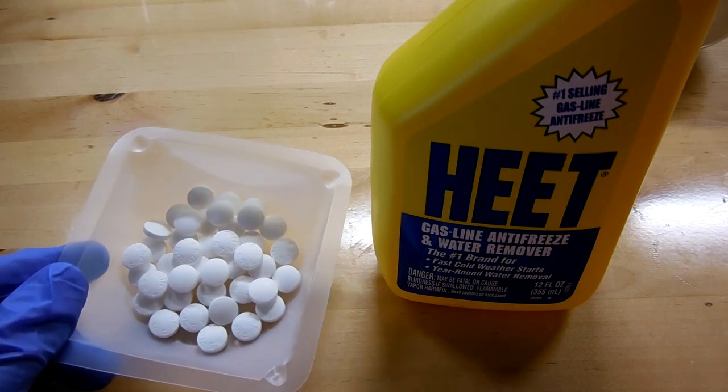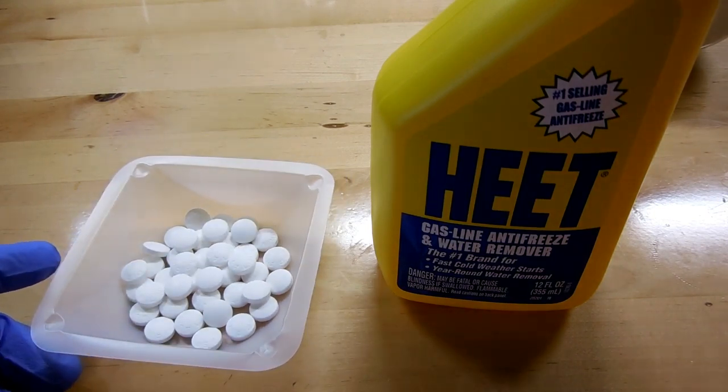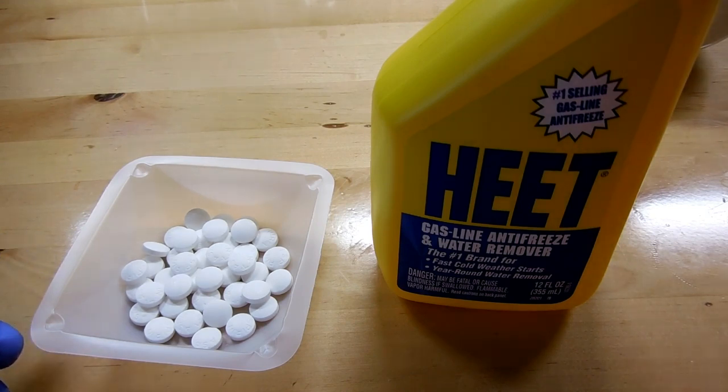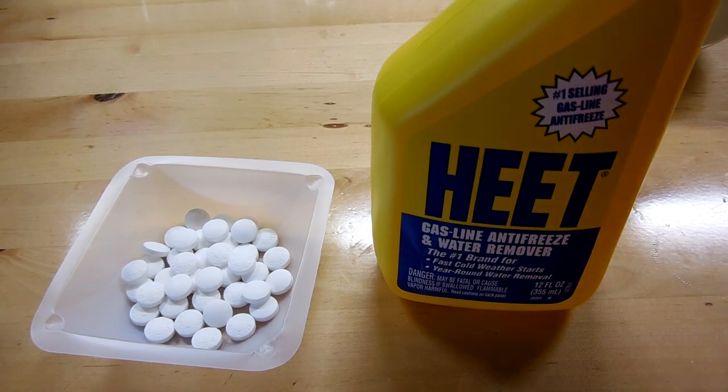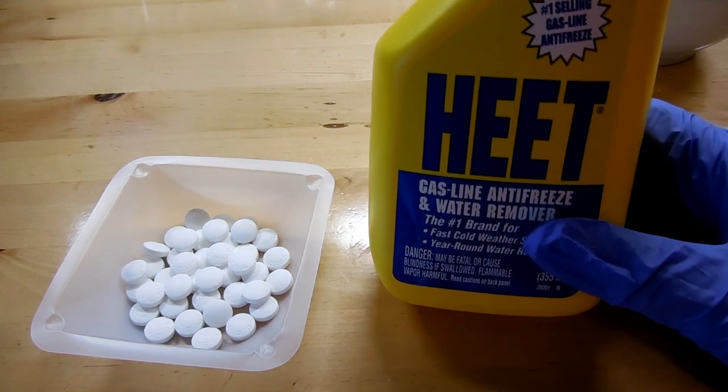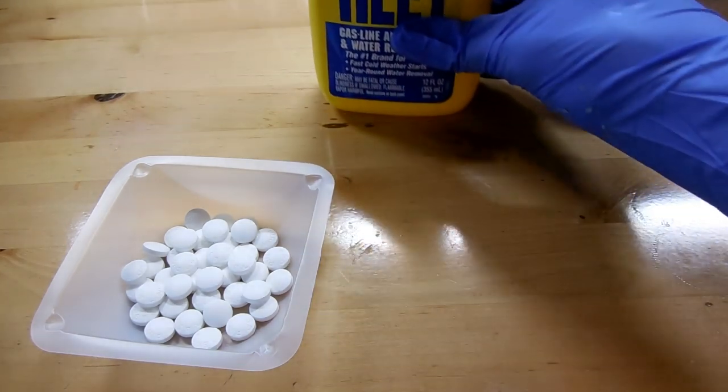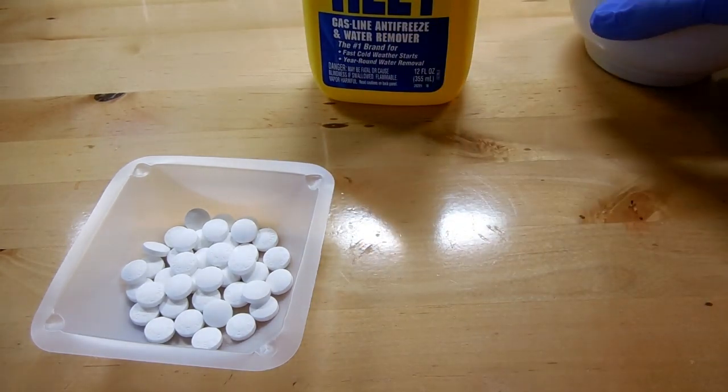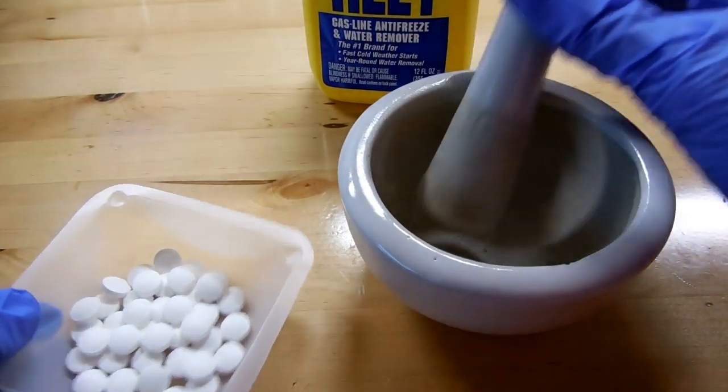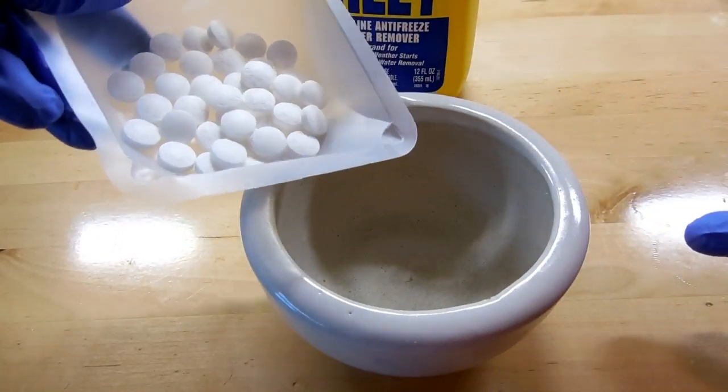These are 40 tablets of aspirin which each contain 325 milligrams of acetylsalicylic acid, the active ingredient in aspirin. That's going to give us 13.0 grams of the acid and we're going to react that with methanol. My methanol source is heat antifreeze. First of all we need to grind these tablets down into a powder so the reaction can proceed at a reasonable rate.